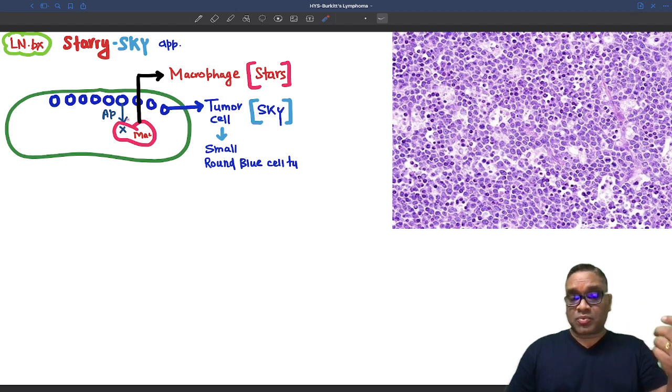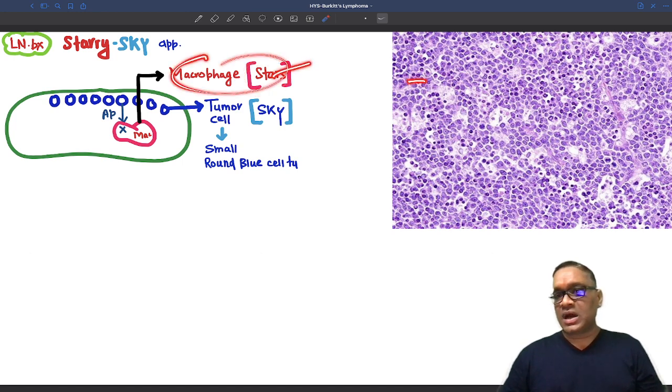Because of the anti-apoptotic absence, there will be more apoptosis and due to more apoptosis, macrophages will come. So macrophage with tumor debris will be called a star. Now you can see in this biopsy, these are the macrophages which are forming the stars.